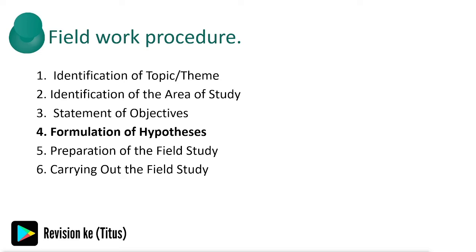Let's look at the fieldwork procedure. The first step is identification of a topic or theme, for example, a study of rocks around the school. The second step is the identification of the area of study, which should be chosen carefully to ensure the field study is successful. It should contain sufficient information and be within a convenient distance to reduce expenses. The third step is to provide a statement of objectives, stating the aims of carrying out the field study, which acts as guidelines. These should be brief, simple, testable, and easy to evaluate.